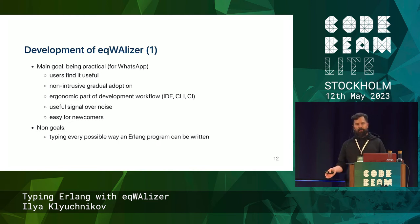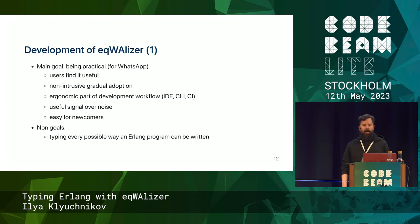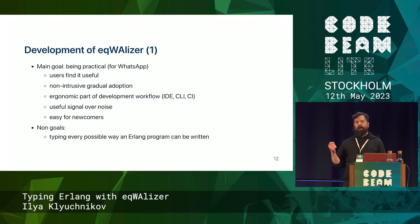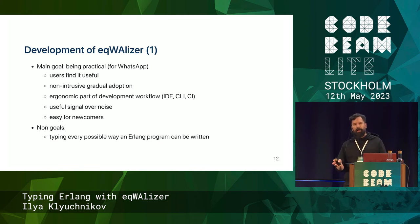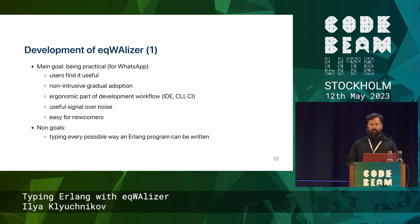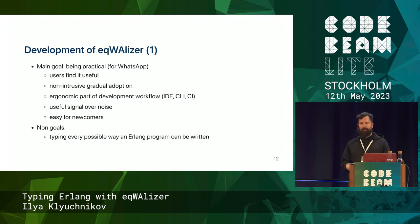As of now, every change inside WhatsApp goes through CI and Eqwalizer is part of the CI. You cannot land or ship your code if it doesn't pass Eqwalizer checks — if this code isn't well typed. Another explicit goal was to prioritize useful signal over noise, and also to make the tooling experience welcoming for newcomers. If people already have experience with TypeScript or typed Python, the experience in Erlang should be quite similar — they don't need to learn new things like success typing.